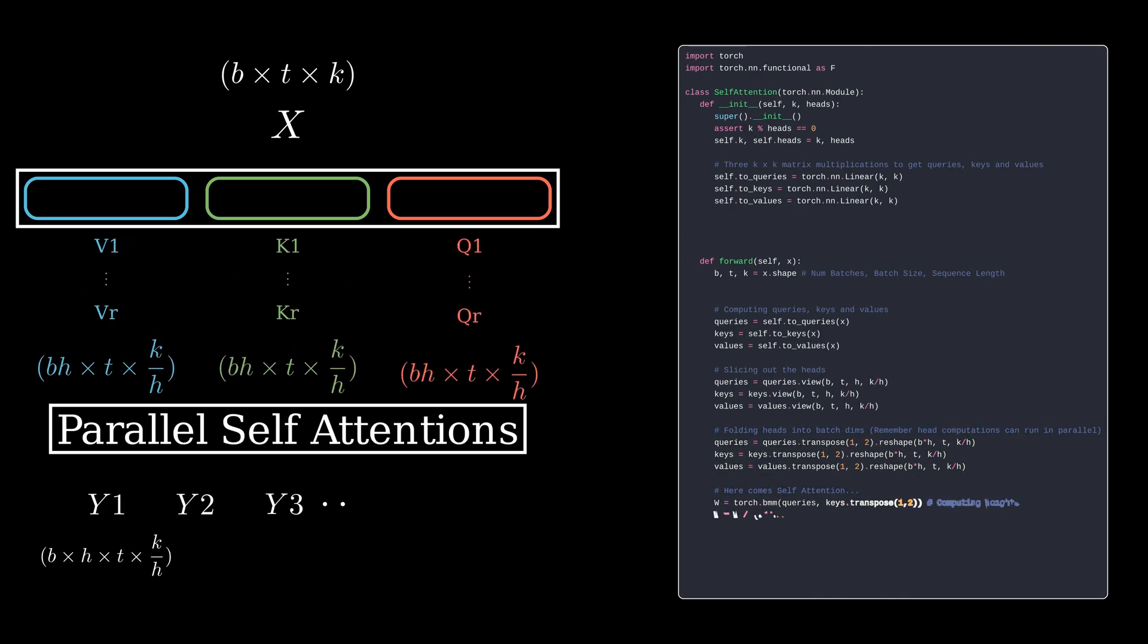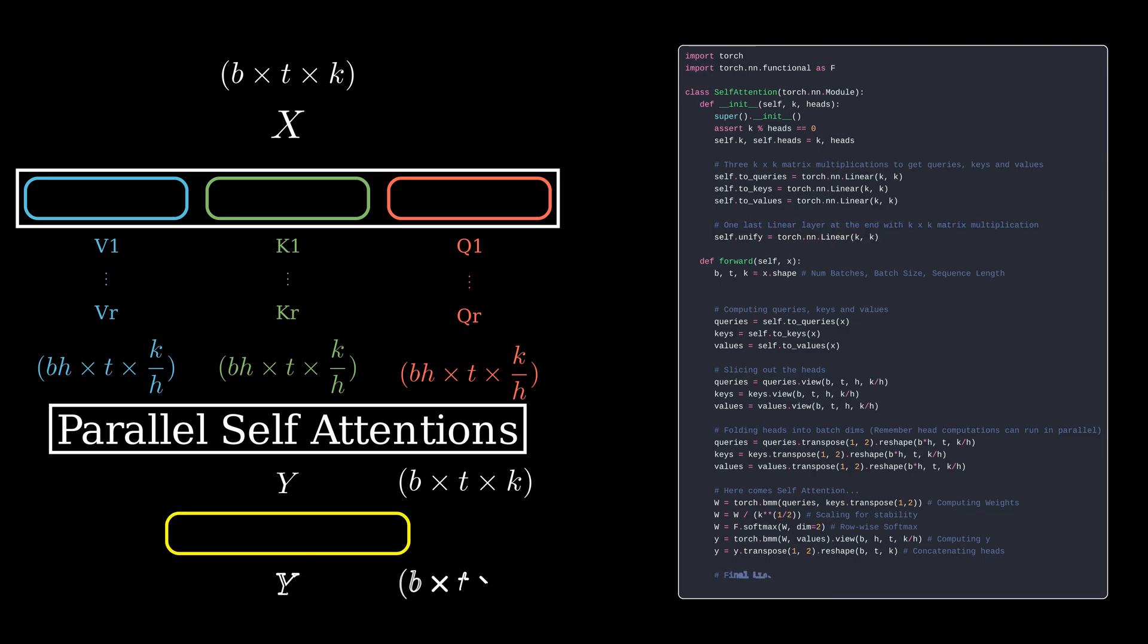Finally, comes the parallel self-attention which gives different output tensors, followed by the concatenation of different heads. Finally, the unifying neural net layer which gives the final output. Now, we can use this code to build a full-fledged transformer and train it on IMDB dataset.